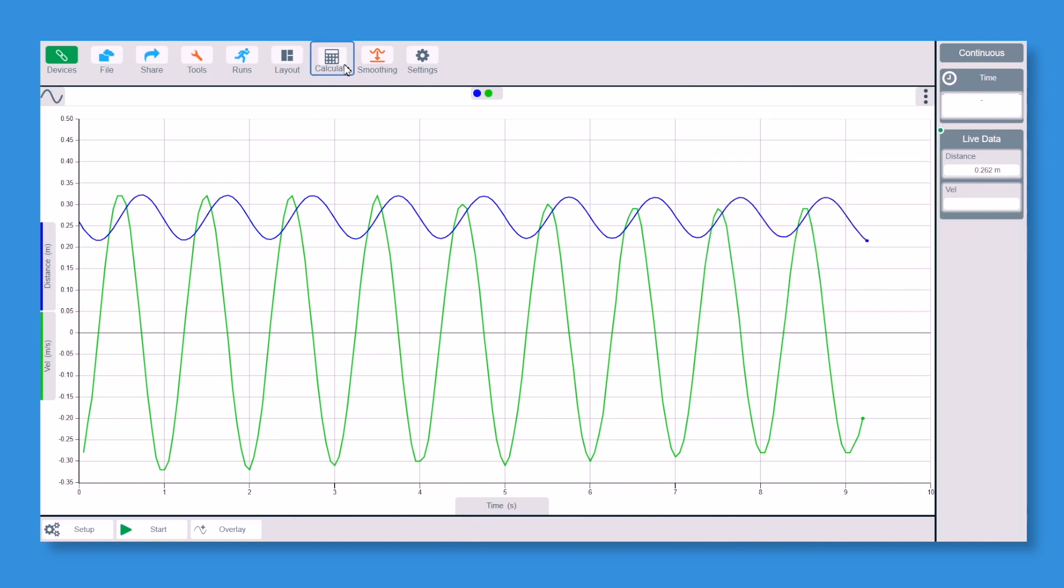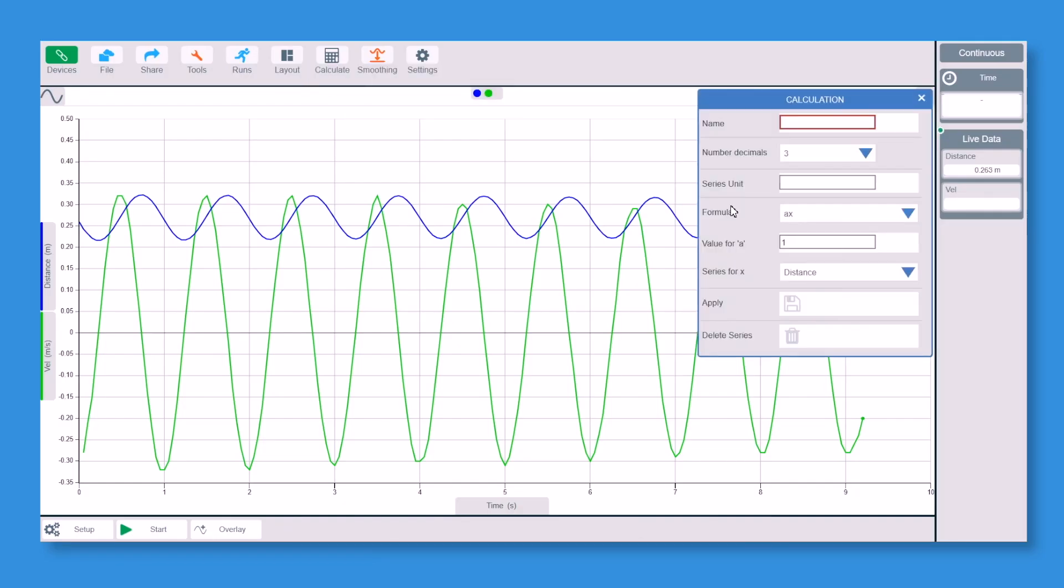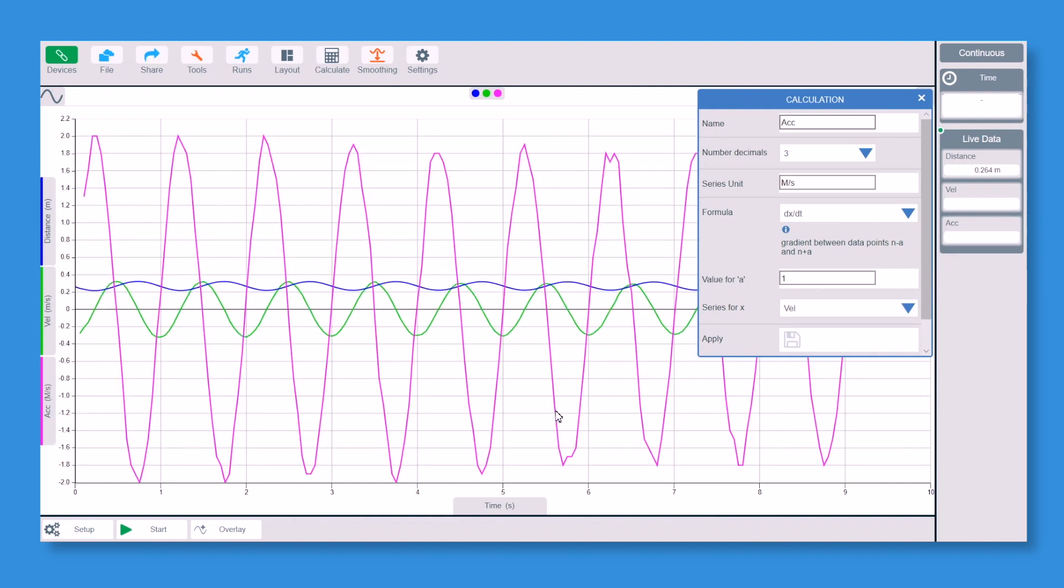Now we've got the velocity, as I said a moment ago, we can now work out the acceleration. So I can now add a series on here. I can now add acceleration. This, again, is going to be MS. We now need the same formula as last time, dx divided by dt. So we go down to here, so that's fine. But this time, instead of going from the distance data, we're going to go from the velocity data. So we can now go onto the velocity. We can now save that, and we have that on the screen.